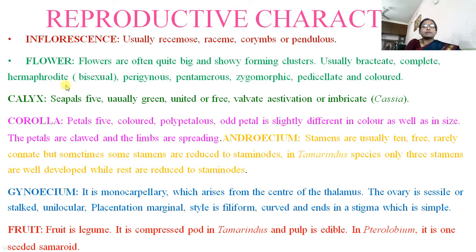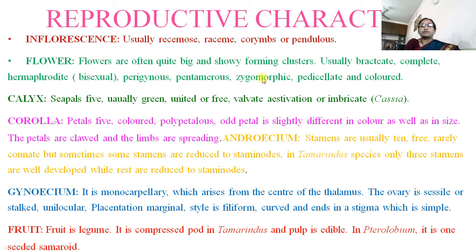Flowers are hermaphrodite (bisexual), perigynous with semi-inferior ovary, pentamerous, and zygomorphic — meaning we do not get two equal halves when the flower is cut from the center. Flowers are pedicellate and colored.